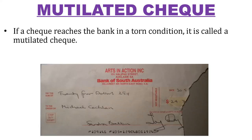Then comes the mutilated check. A mutilated check is a torn or damaged check that reaches the bank in poor condition. If a check is slightly folded or torn — as you can see in the picture — it may not be accepted at all. If it is slightly bent, its condition is evaluated and validated once. If acceptable it may be processed; otherwise it is declared a mutilated check, meaning it is in a torn condition and is an unacceptable check.